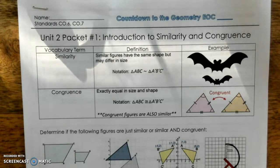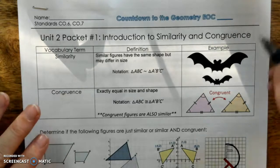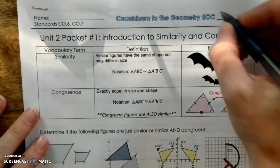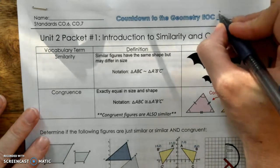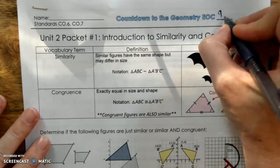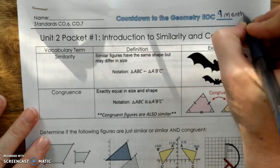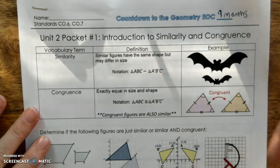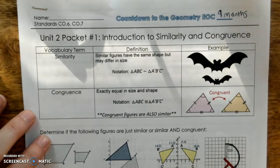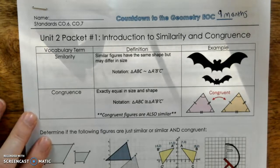Starting off, countdown to the Geometry EOC. August is through, we are in September, so we are at nine months until our Geometry EOC. Okay, our vocabulary terms.